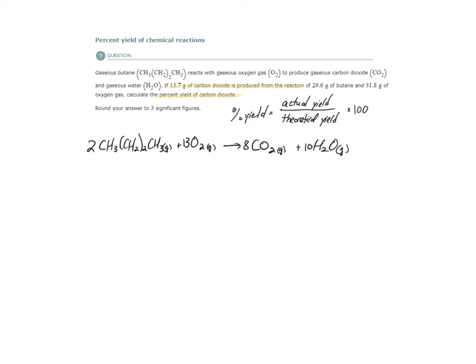So we start with 29.6 grams of butane and 31.8 grams of oxygen gas. Now we make 13.7 grams of carbon dioxide, but what we want to find is what's our theoretical yield of carbon dioxide, and how does that match up to what we actually obtained? So because we are given the starting amounts of both reactants here, reactant A and reactant B, I need to figure out which one is my limiting reactant.